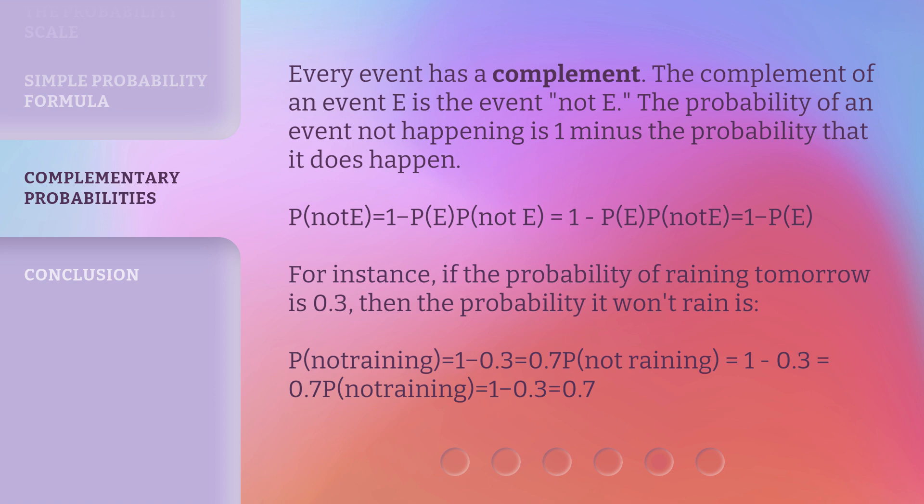P(not E) = 1 - P(E). For instance, if the probability of raining tomorrow is 0.3, then the probability it won't rain is P(not raining) = 1 - 0.3 = 0.7.